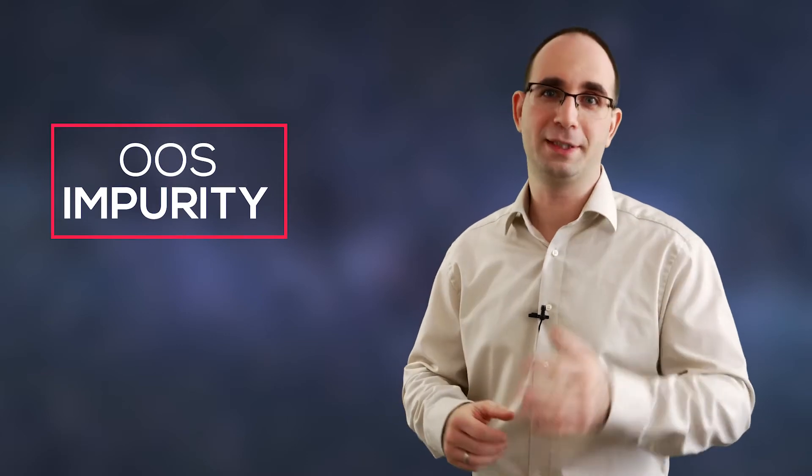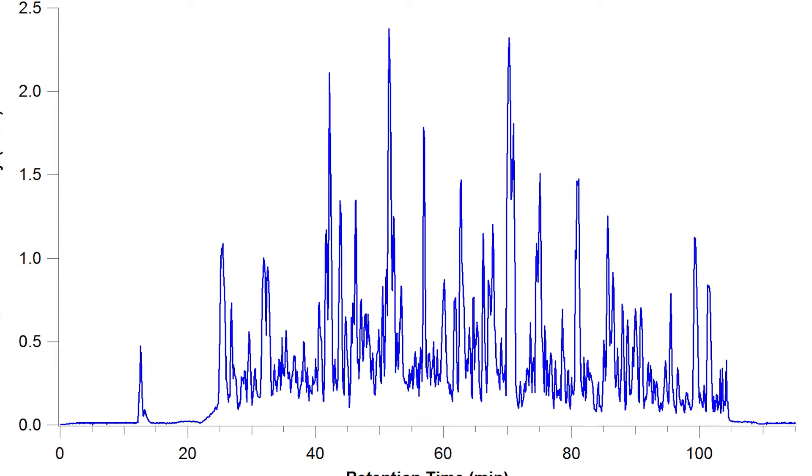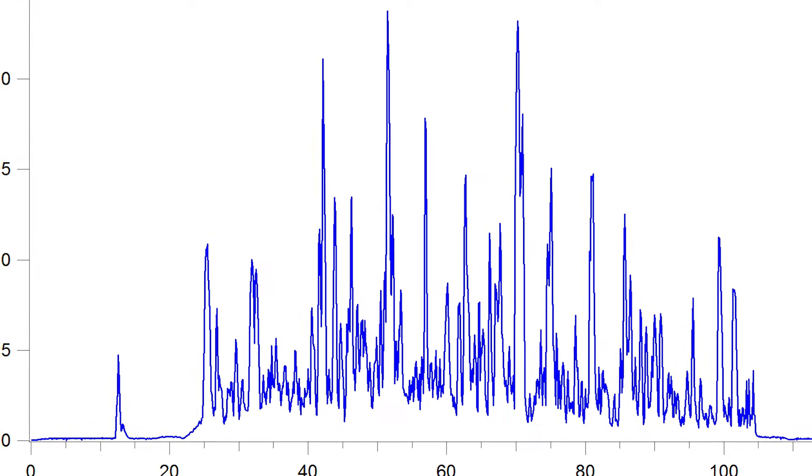Then the FDA auditor looked at the 18-month stability studies of the same lot 8922. Now guess what the chemist found when he retested the batch? Yes, a new impurity OOS.